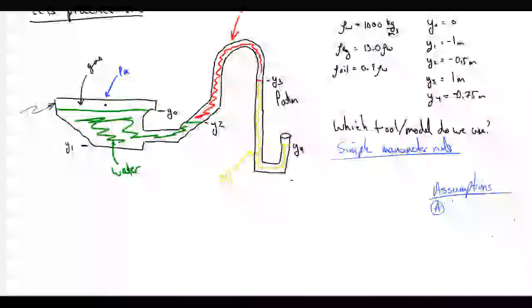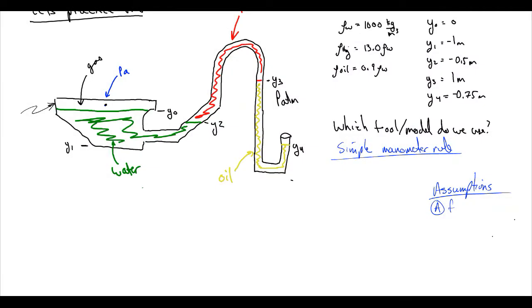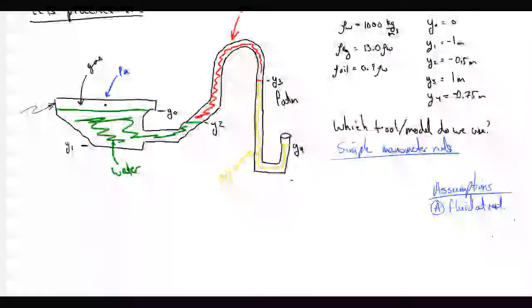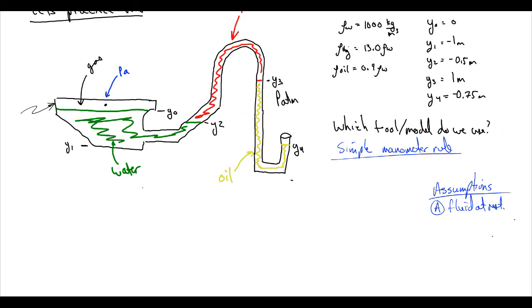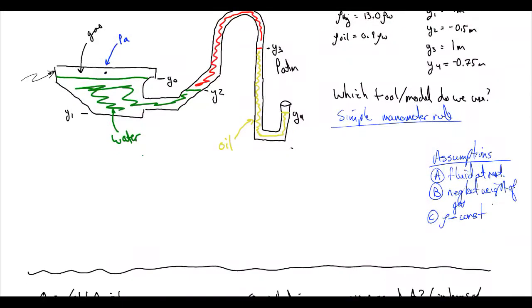So what are the assumptions we use with this? A, fluid at rest. Because at its heart, the simple manometer rule uses Pascal's law. It uses the fact that delta P is equal to rho G delta H. And that has to have the fluid at rest. B, we're going to neglect the weight of the gas. And C, density is equal to a constant.